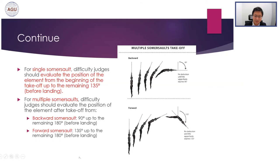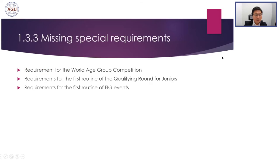Another controversial issue for difficulty judges is incomplete twisting. In the rules there is a specific section for this. We need to look at the position of the feet at landing: foot rotation of more than a quarter twist is considered a half twist, and foot rotation of more than three-quarter twist is considered a full twist.